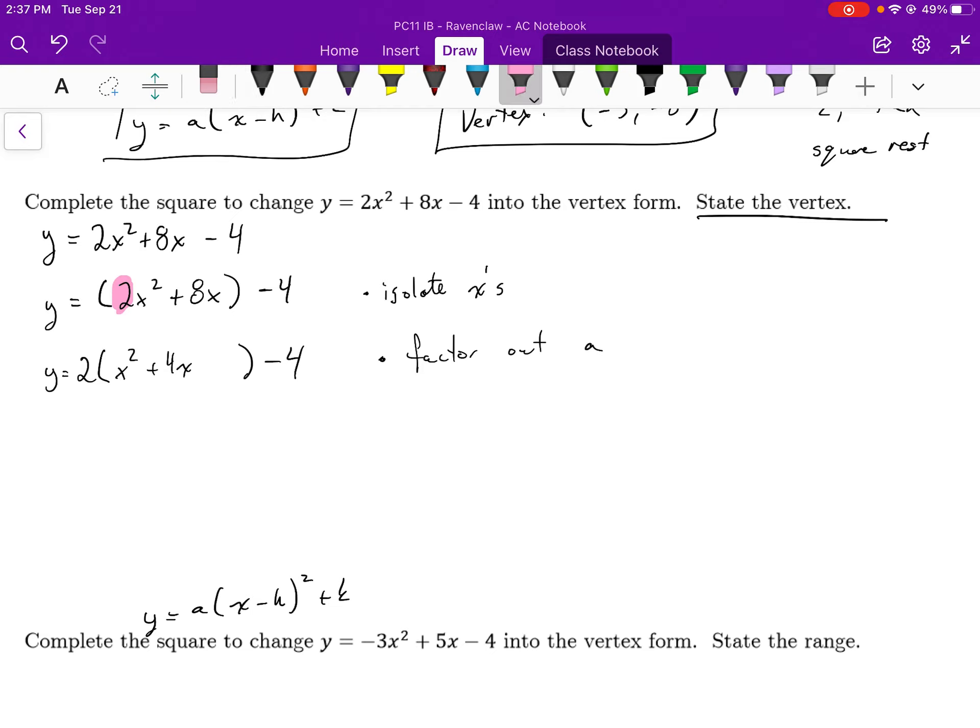The game is set up where the x's are isolated and my coefficient in front of the x squared is 1. We can play this game called completing the square. Let's engage.